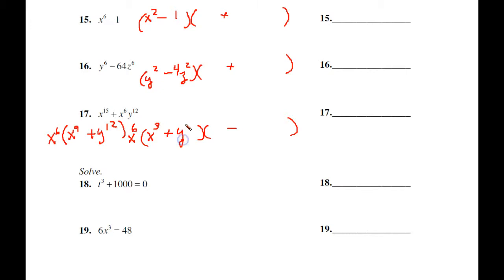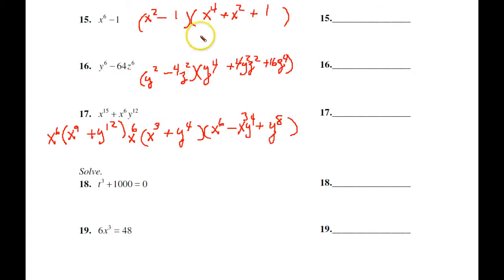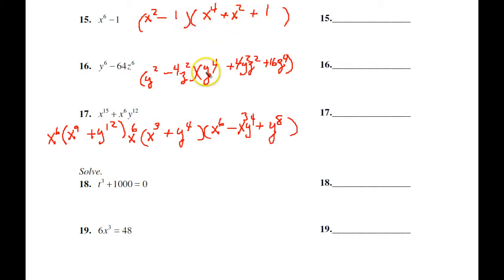With X to the sixth factored out, the cube root gives me a three there, and this gives me Y to the fourth. Checking our work: we square this, multiply these together disregarding the sign, and square that. That checks out. Squaring that gives a positive 16 Z to the fourth. Perfect — that looks good.